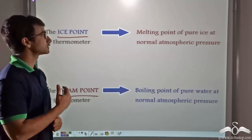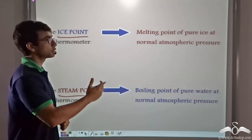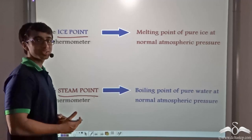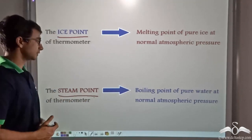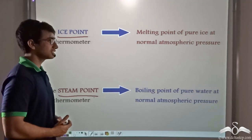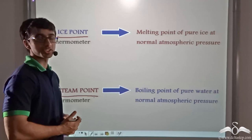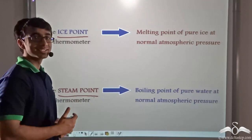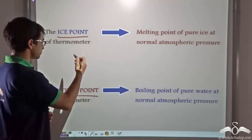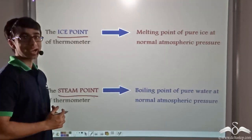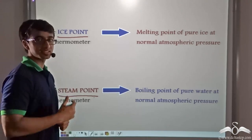The ice point of a thermometer is the melting point of pure ice at normal atmospheric pressure, which is zero degrees Celsius. The steam point of the thermometer at normal atmospheric pressure is the boiling point of pure water, which is 100 degrees Celsius. Now let us find out how we are grading the ice point, the steam point, and all the scales in between.